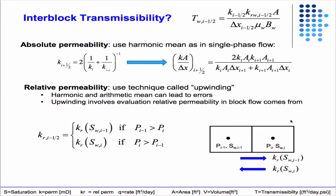So interblock transmissibility - it's the same as it was before, but except now you have the relative permeability term in it. Other than that, everything's the same. You use the harmonic mean for the standard permeability.